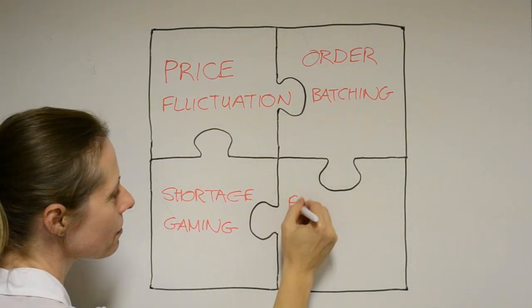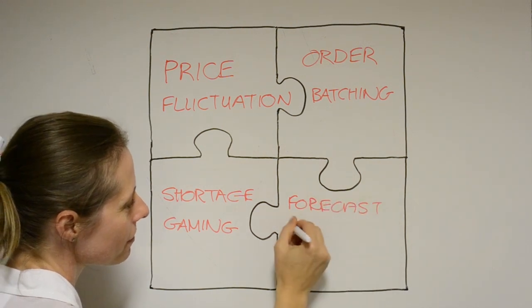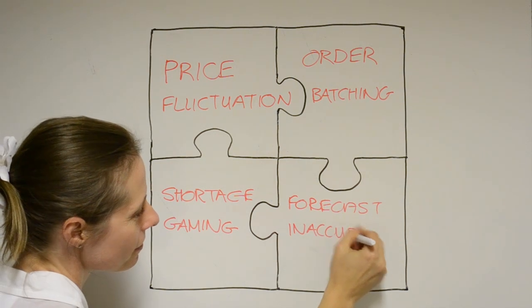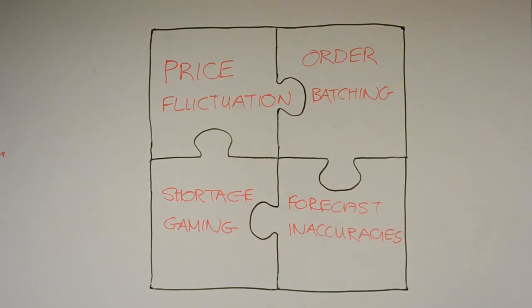Demand forecast inaccuracies. As each entity along the chain places an order, it replenishes stock and includes some safety stock. With long lead times, there may be weeks of safety stock, which make the fluctuation in demand more significant.